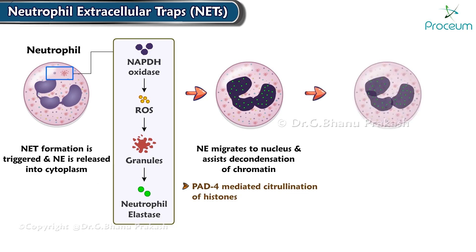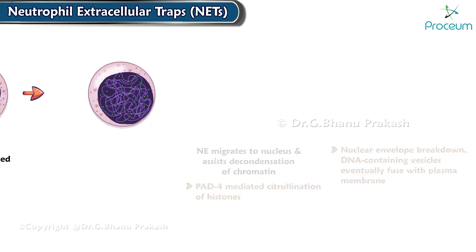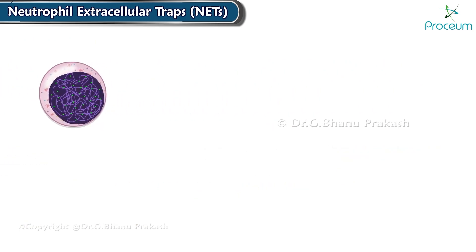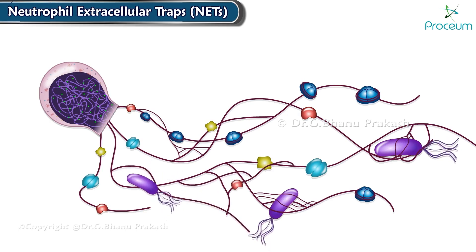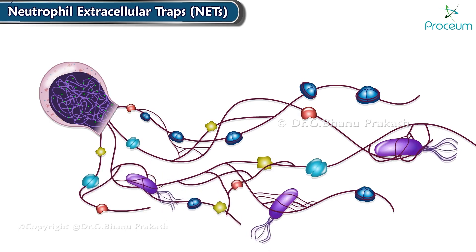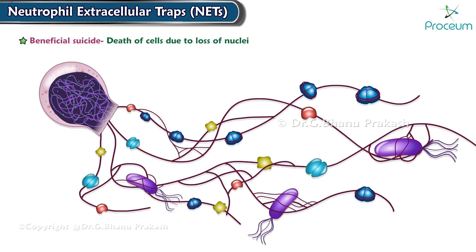The rounded neutrophils then undergo nuclear envelope breakdown, so vesicles containing DNA eventually fuse with the plasma membrane, and the NETs are released to trap the microorganisms. This process is also known as beneficial suicide, since the loss of nuclei leads to the death of the cells.